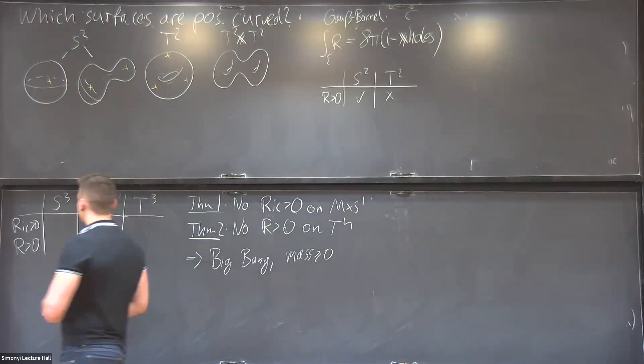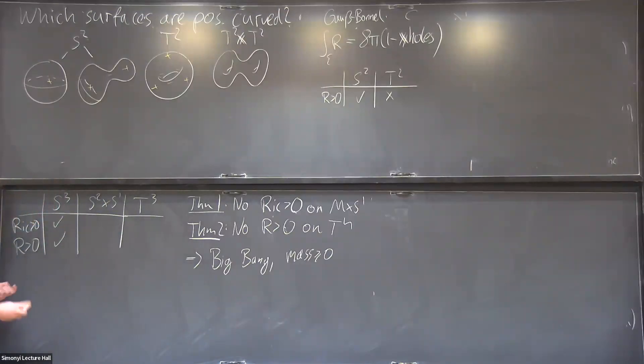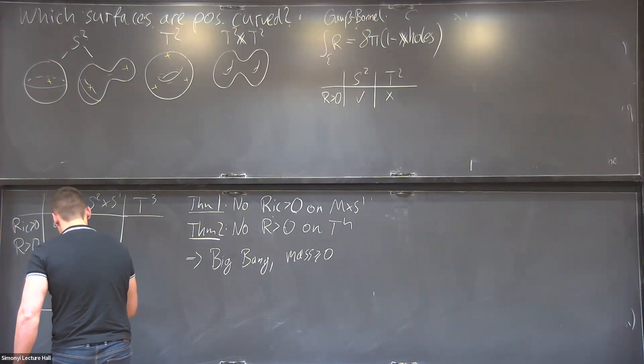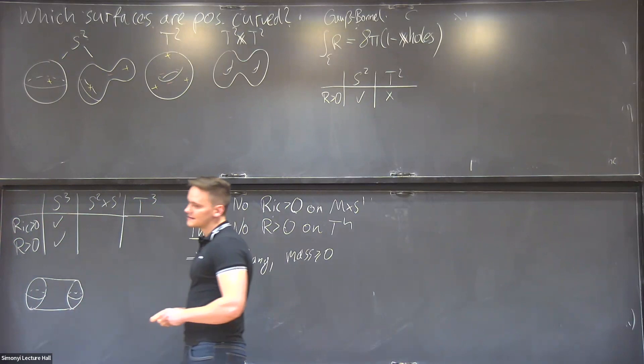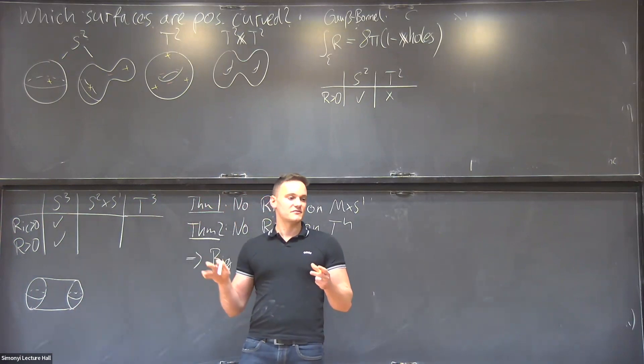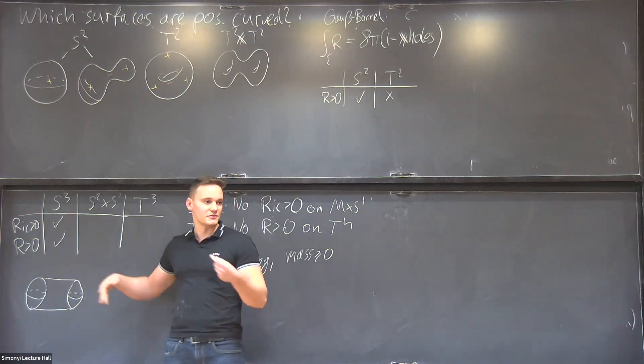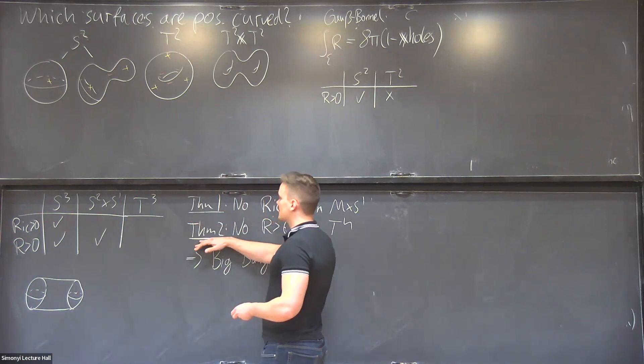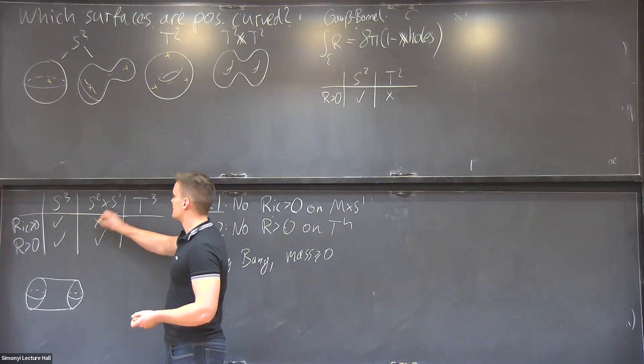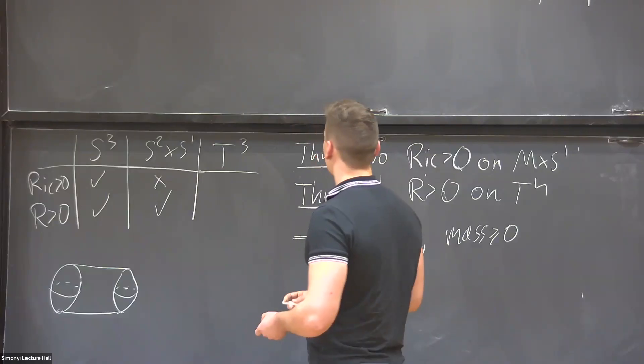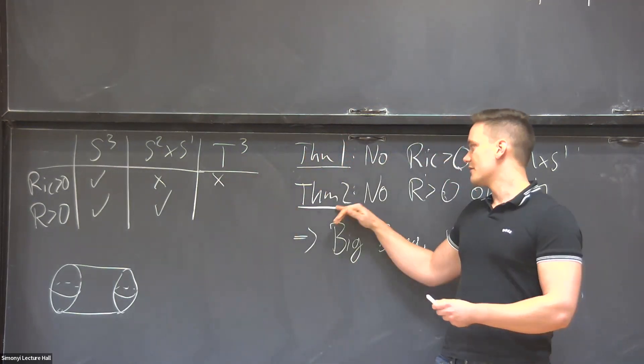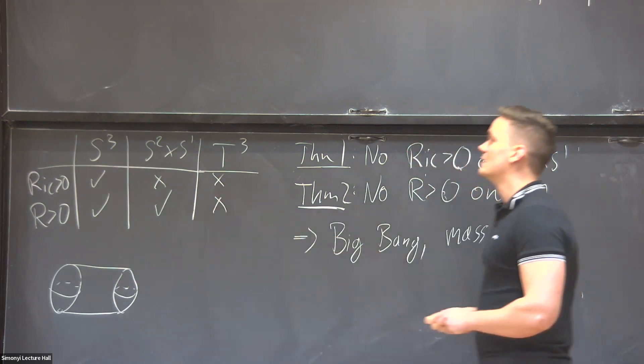So now we can try to fill in this table. Again, the sphere S³ is going to be positively curved, no matter which kind of curvature we choose. And then for S² × S¹, let me draw a quick picture. Think of having like here, like a sphere cross an interval, where we identified opposite ends. And then you have basically positive curvature in some direction, but you also have a flat direction. But if you take the average of it, which would be scalar curvature, it would be positive.